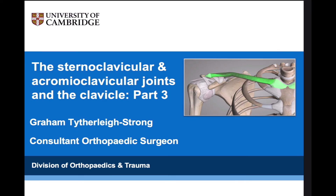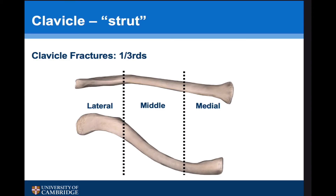This is the third talk in the SCJ, ACJ and clavicle sports med series. In this talk we're going to focus on the clavicle, which as we saw in the introduction is really a strut. The clavicle is an S-shaped flat bone and is in fact the only horizontal long bone in the body. Traditionally it's divided into lateral, middle and medial thirds.